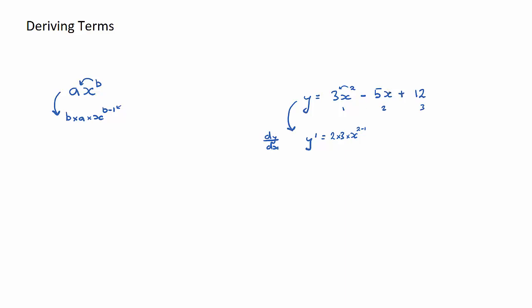Next one now. When we just have an x there is actually an invisible power of 1. So now we multiply the 1 by the 5. Now keep in mind this 5 is negative, so it's going to be minus 1 times 5 times x to the power of 1 minus 1. We subtract 1 off the power. That's the second term done.